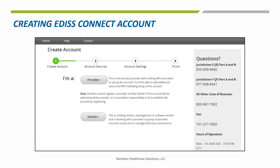This screen is an important one — it is the first screen in the registration process. Choosing the correct option will save you a lot of headaches in the long run. If you are a provider, you will click Provider. But if you are a billing service, clearinghouse, or software company, you will click the Vendors box.